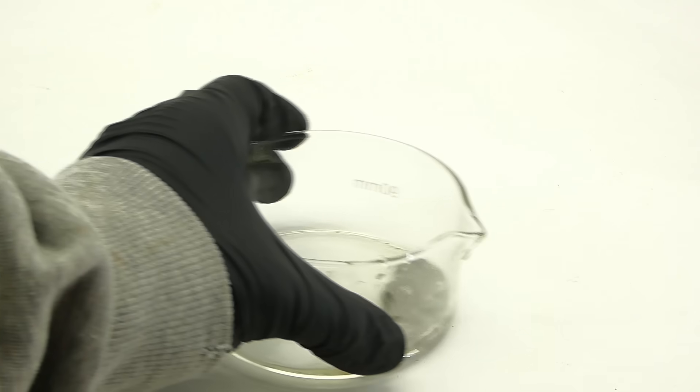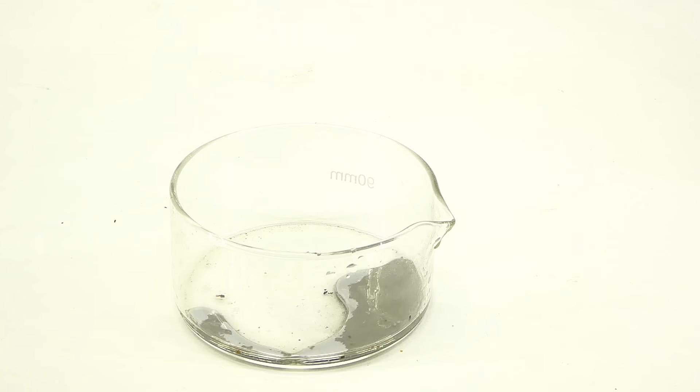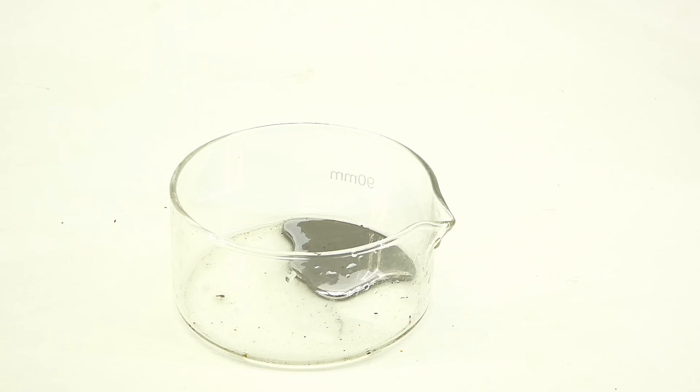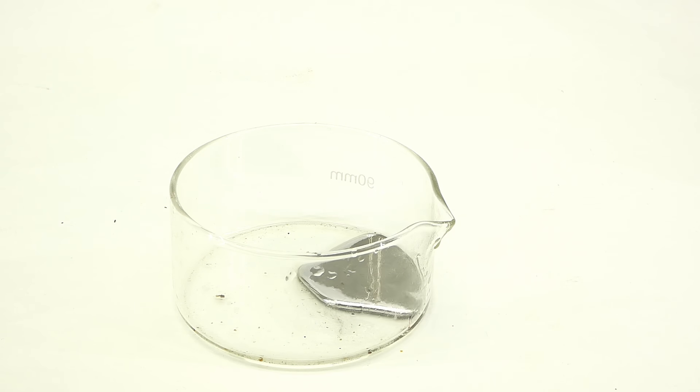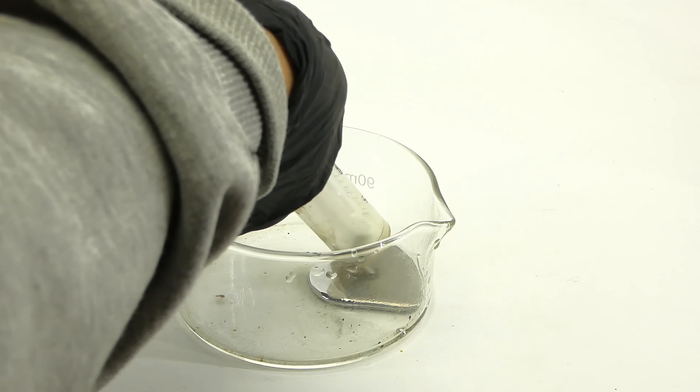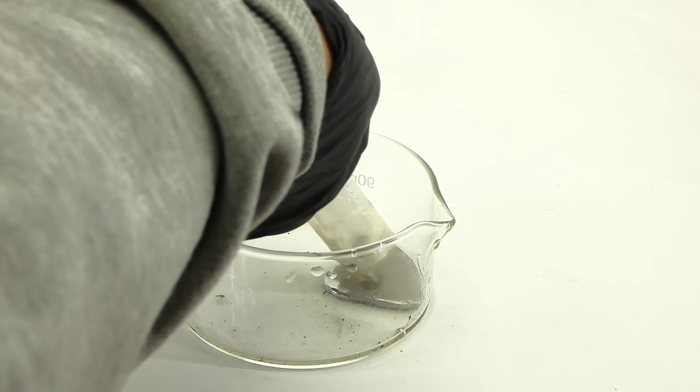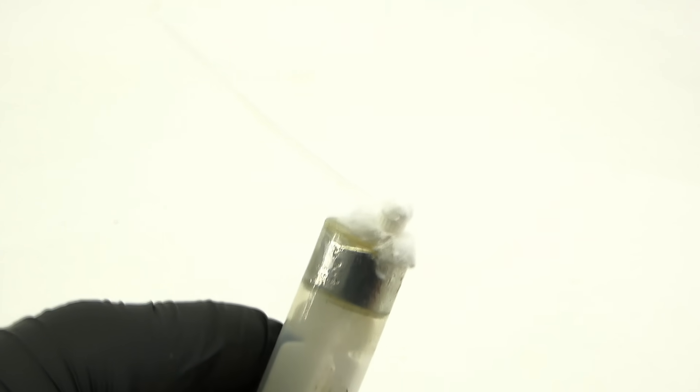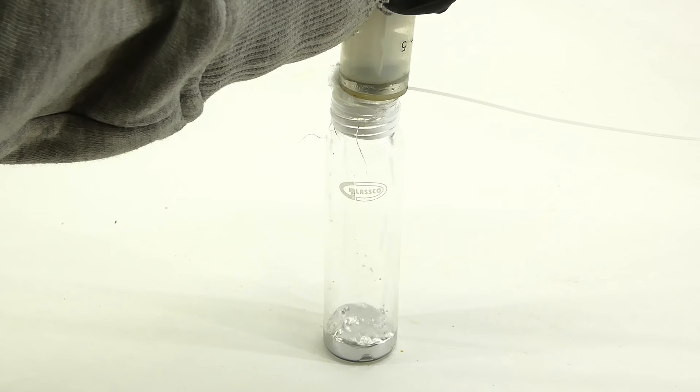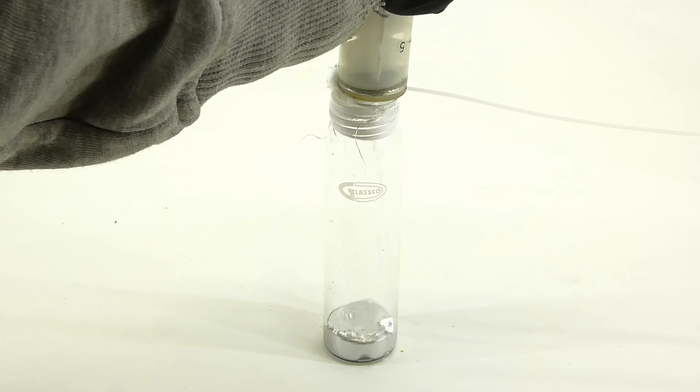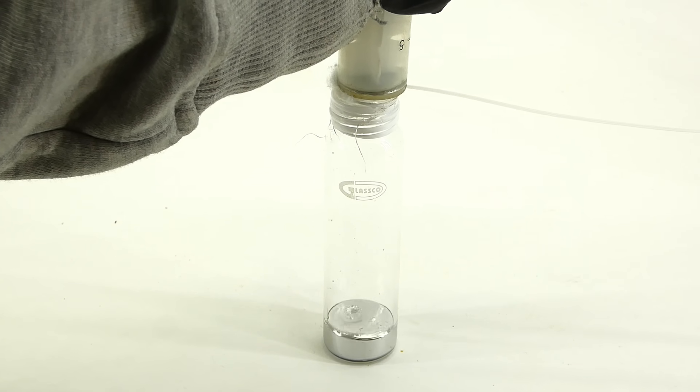After the washings, the mercury looked much better than before. It still had some junk floating on it, which I wanted to remove. To do that, I sucked everything into a syringe, made a makeshift cotton filter, and passed the mercury through it straight into a vial, which looked and sounded really satisfying.